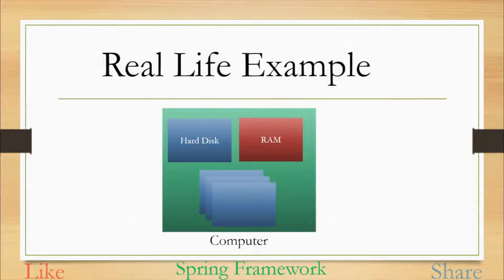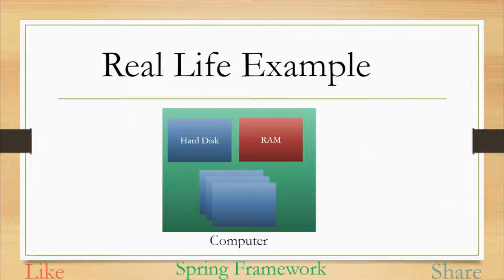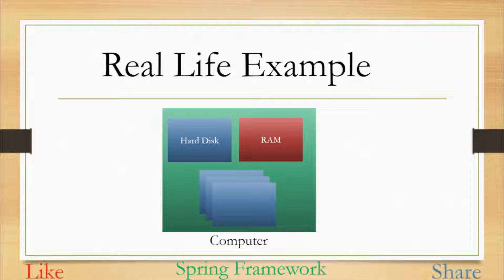As we develop code we build objects, and those objects are dependent on some other objects. So let's take a real-life example to understand dependencies. Suppose you want to assemble a computer — you will not be making all the required components yourself. You will get RAM from some company making it, hard drive from some other company, and similarly for other components. In that way you are dependent on those third-party companies to assemble your computer.